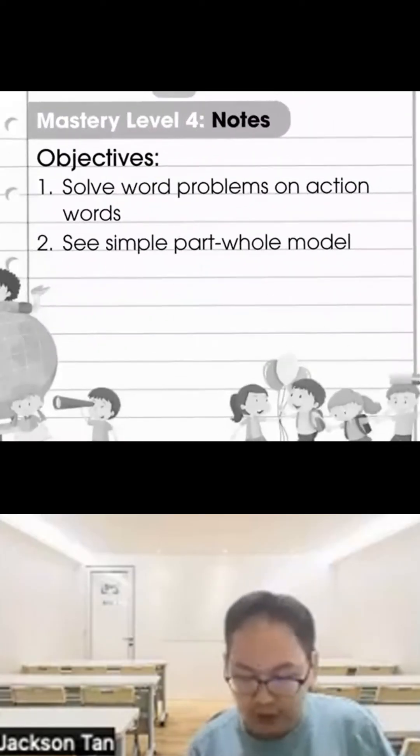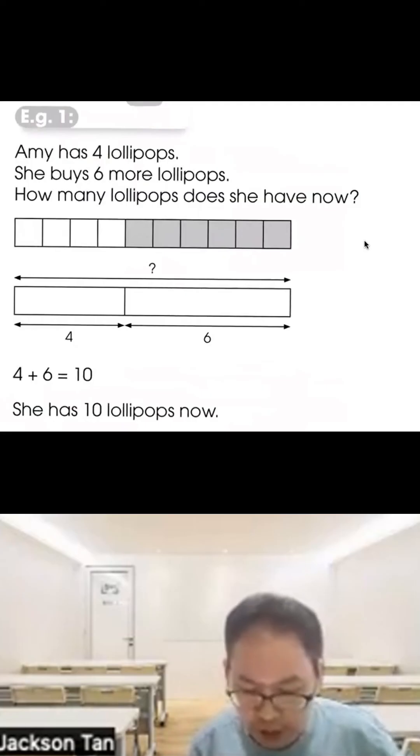Mastery Level 4: The objective is to solve problems with action words using simple bar models. Amy has 4 lollipops. She buys 6 more lollipops. How many lollipops does she have now? You can use a bar model: one rectangle represents 4, a bigger rectangle represents 6. Altogether, 4 plus 6 equals 10. She has 10 lollipops now.